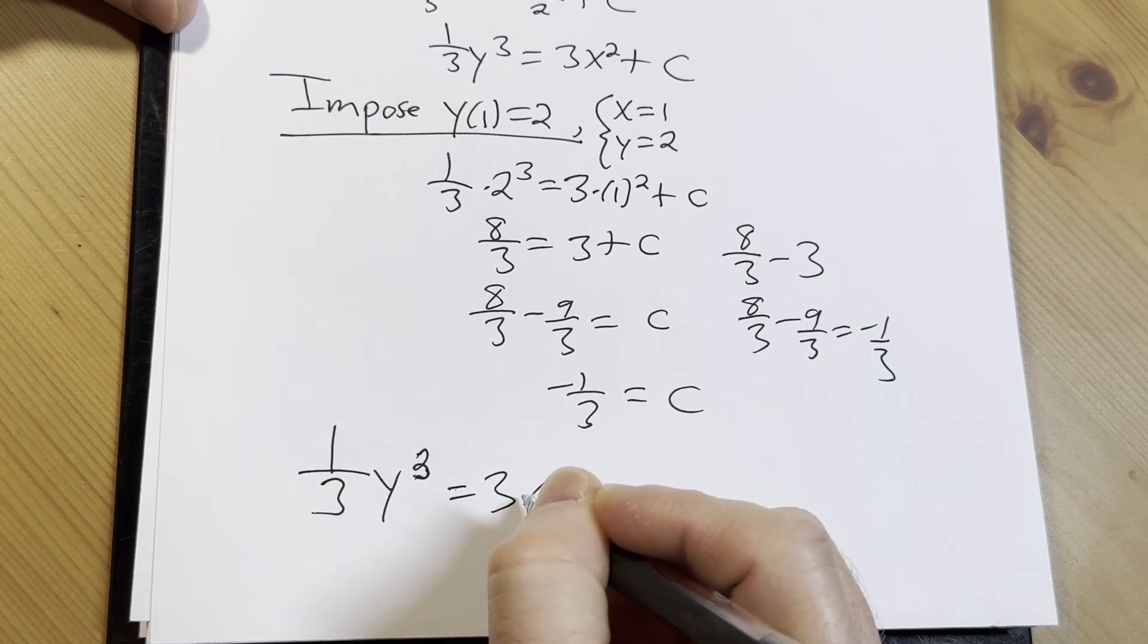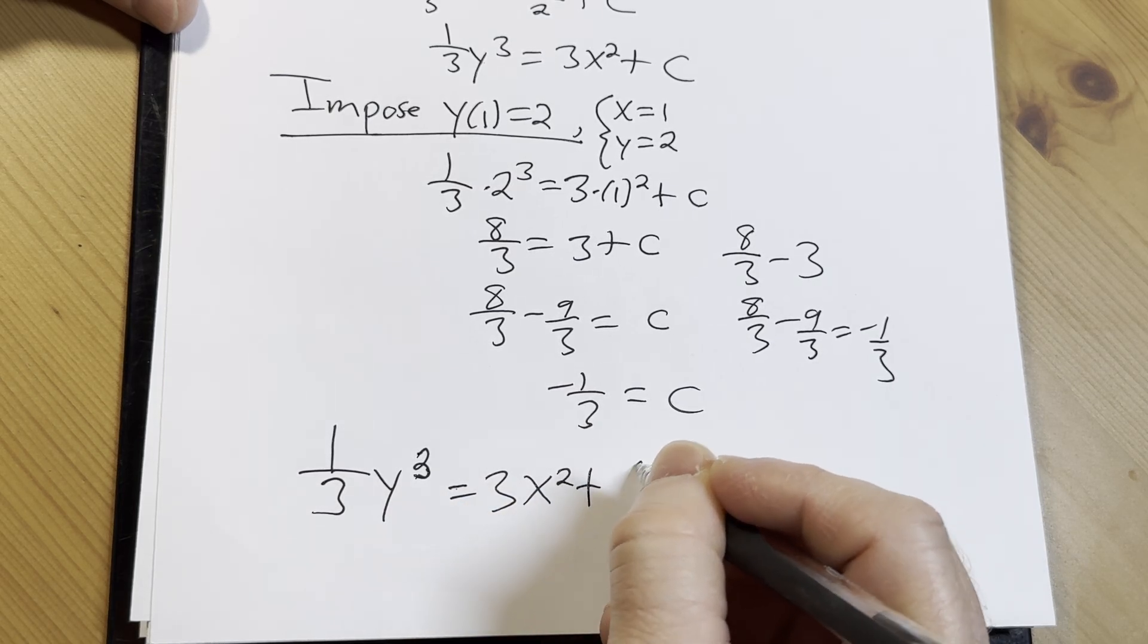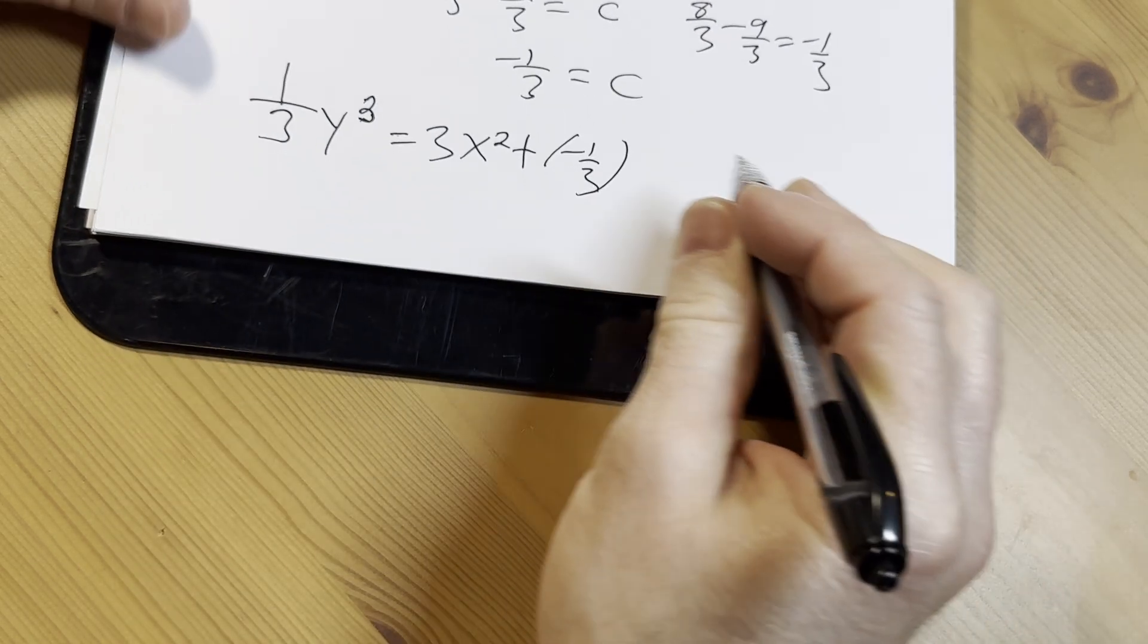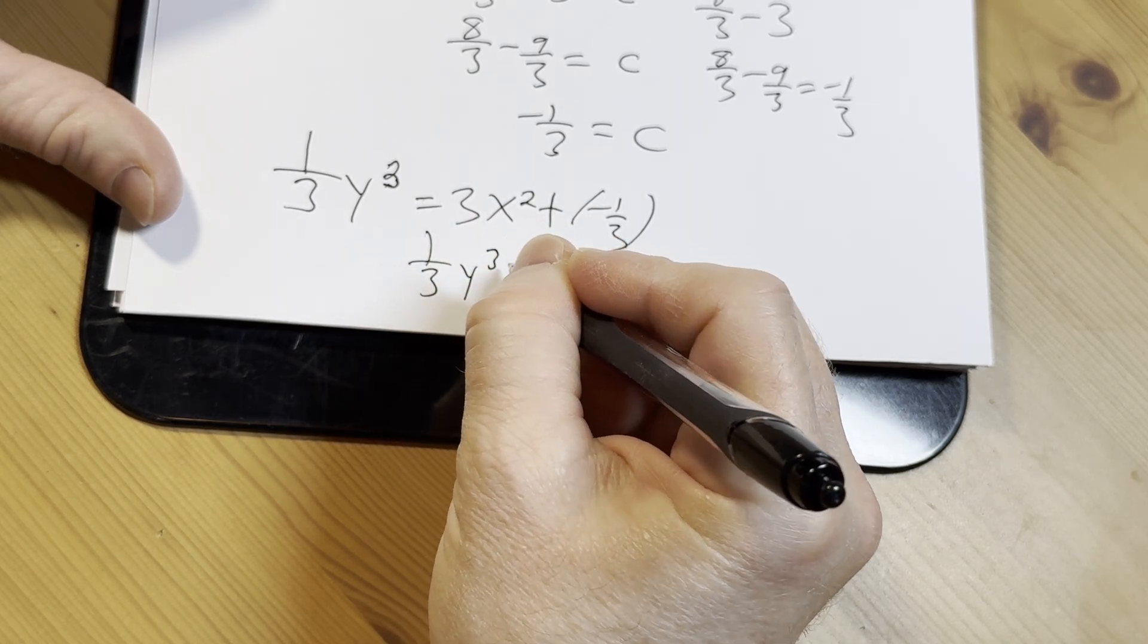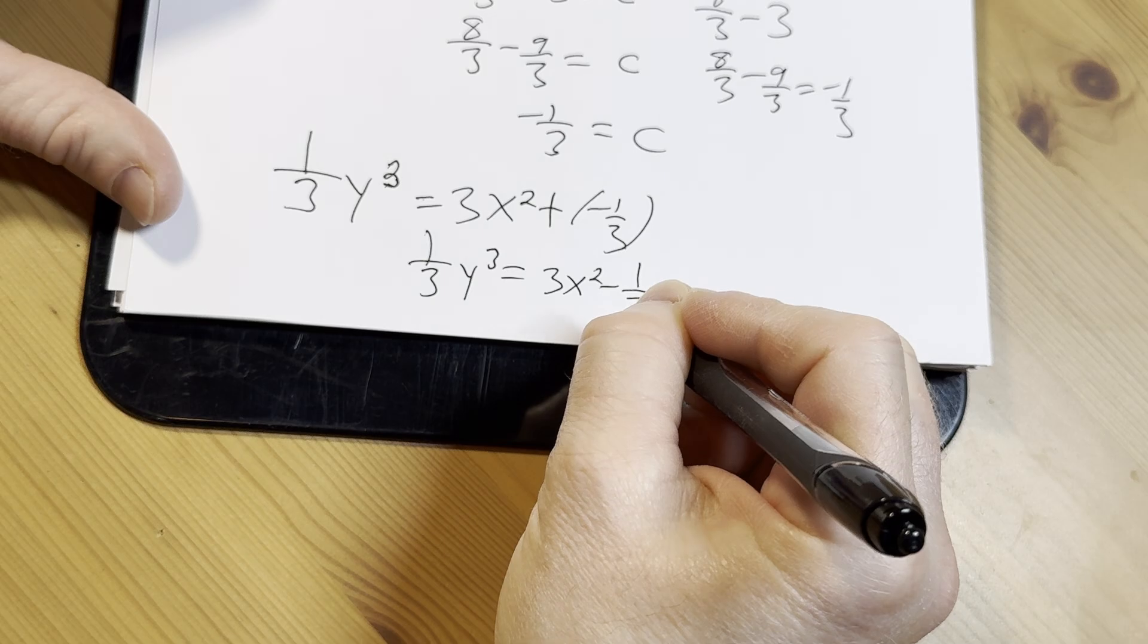oh, negative 1 third. So we're going to write it as 1 third y cubed equals 3x squared minus 1 third.